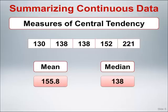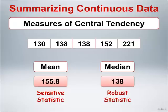Because of this sensitivity to outlying values, we refer to the mean as a sensitive statistic. Because of its resistance to outliers, we refer to the median as a robust statistic.